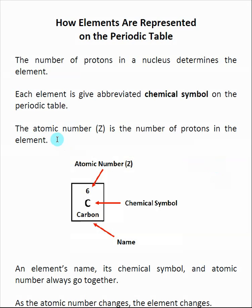Also on the periodic table, an atomic number Z is represented, which is equal to the number of protons in a given element.